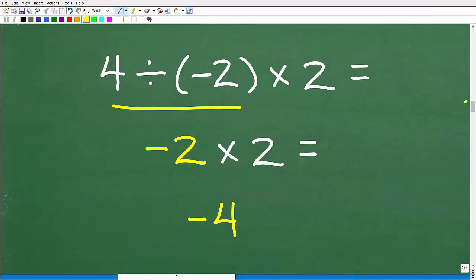Not much work to do here because we're just talking about basic division and multiplication. So four divided by negative two, a positive number divided by a negative number is negative. So that's going to be negative two times a positive two, which will give us negative four as the correct answer.